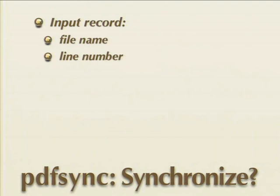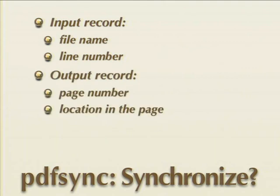Let us now tell a few things about PDFSync and how it works. Given a word in the TeX input, for this word you have a filename and a line number — this is the input record. Once everything is properly typeset, this word appears in the output at some page number and some location on the page — this is the output record. Synchronization is just the link between the input record and the output record.